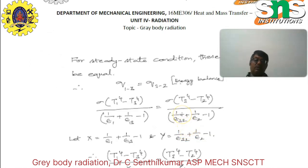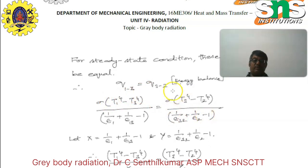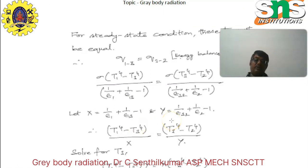Simplifying the equations: Q1-3 equals Q3-2 as the energy balance under steady state condition. So sigma(T1⁴ − T3⁴) divided by (1/emissivity_1 + 1/emissivity_13 − 1) equals sigma(T3⁴ − T2⁴) divided by (1/emissivity_3 + 1/emissivity_2 − 1). Let X equal (1/emissivity_1 + 1/emissivity_13 − 1) and Y equal (1/emissivity_3 + 1/emissivity_2 − 1). Then (T1⁴ − T3⁴)/X equals (T3⁴ − T2⁴)/Y.